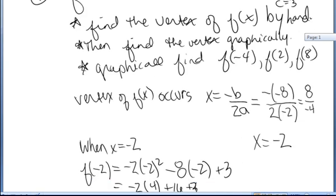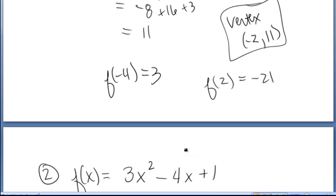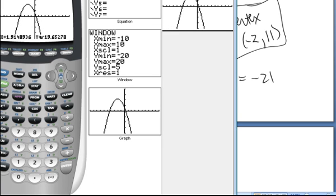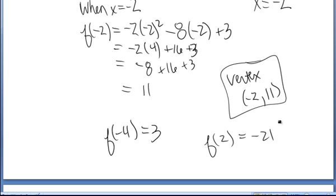If I want to find f of 8, I hit trace, 8, enter. When x is 8, y is negative 189. So, f of 8 is negative 189.